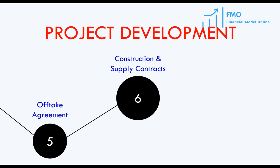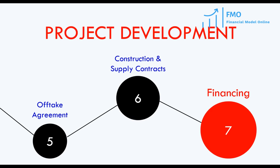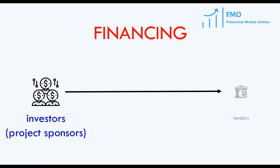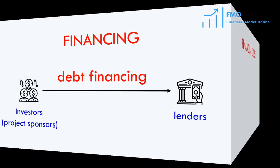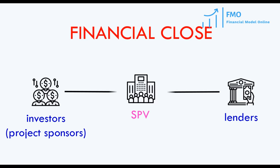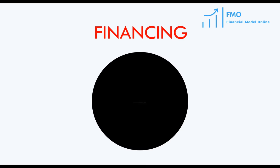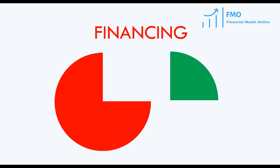When all the studies, permits, and contracts have been concluded, the project reaches a financing stage. At the financing stage, project sponsors negotiate with lenders on the debt financing for that specific project. When project sponsors and lenders reach an agreement, they inject the equity and debt financing into the SPV to finance the construction costs of the project. This stage is known as financial close in project finance. Typically, the construction costs are financed with 70% debt and 30% equity. So, project finance is a highly leveraged transaction.